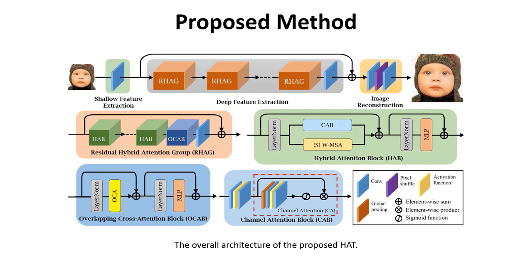According to the above-mentioned observations, we design our method HAT as the figure shows. HAT uses the classic residue-in-residual architecture. The main branch consists of several residual hybrid attention groups, each with several hybrid attention blocks, an overlapping cross-attention block, and a convolution layer. The hybrid attention block is one of the key designs. We insert the channel attention block into a standard SwinIR transformer block to leverage global information, and to alleviate potential optimization conflicts, we combine them in parallel.